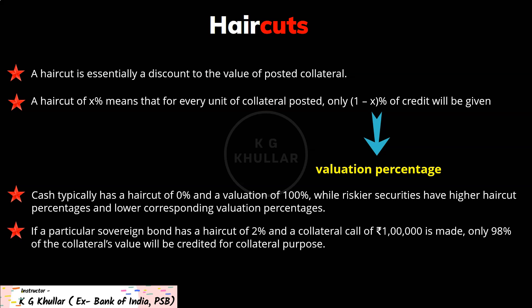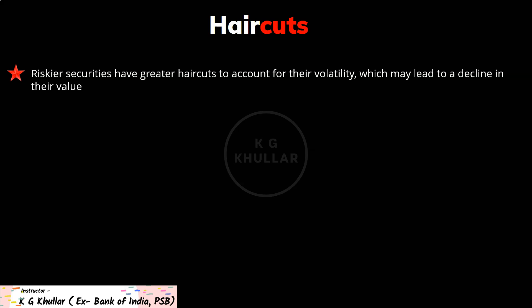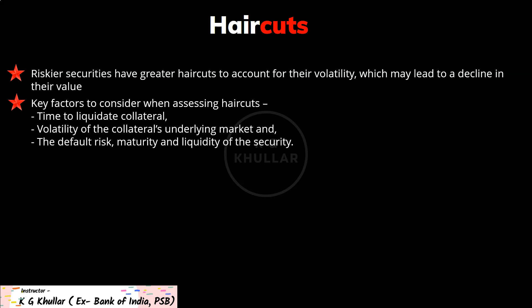For example, if a particular sovereign bond has a haircut of 2% and a collateral call of Rs. 1 lakh is made, only 98% of the collateral's value is credited for collateral purposes. In order to satisfy a Rs. 1 lakh collateral call, Rs. 1,02,041 of the sovereign bond must be posted — we get this by dividing 1 lakh by 0.98. The riskier securities have greater haircuts to account for their volatility. In order of increasing riskiness and higher haircuts: cash typically has no haircut, followed by high quality government bonds, triple-A rated corporate bonds, structured notes or products, and finally equities and commodities.